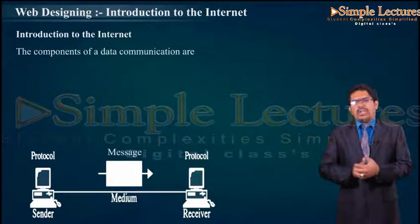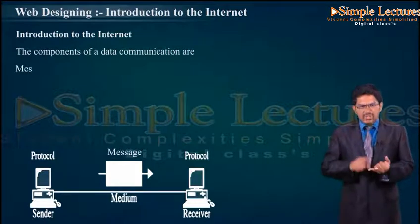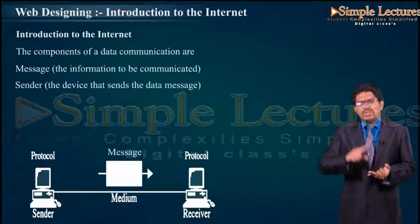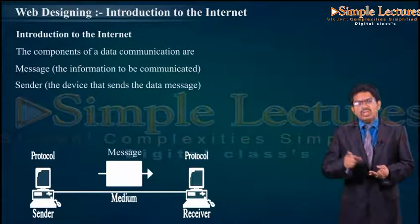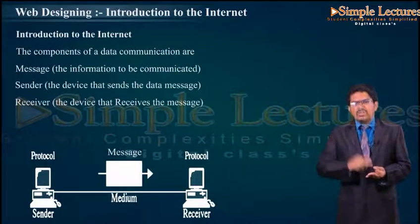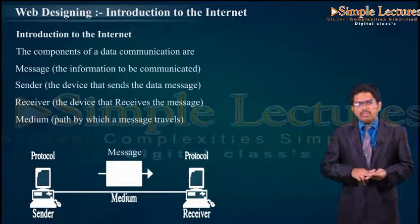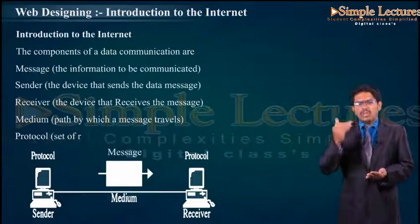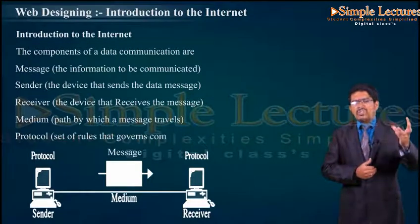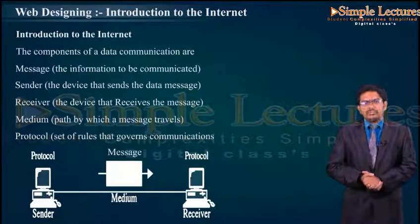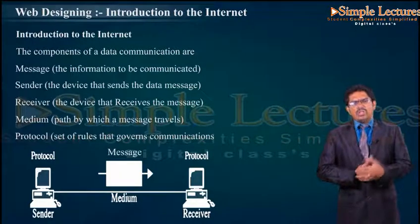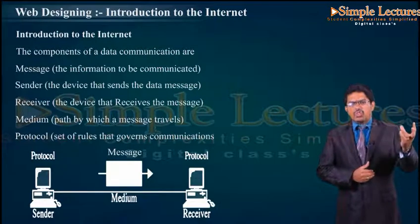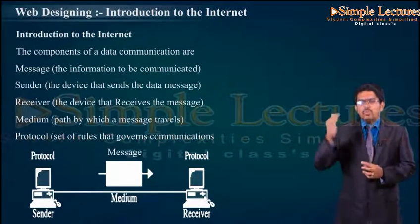The components of data communication are: message — the information to be communicated; sender — the device that sends the data message; receiver — the device that receives the message; medium — the path by which the message travels; and protocol — the set of rules that governs the communication. In this representation, sender and receiver are present and the message is transmitted from sender to receiver.